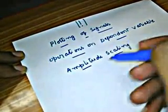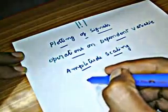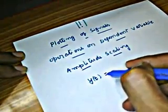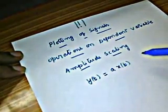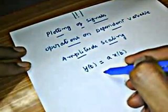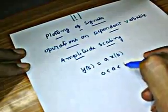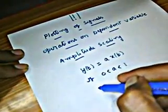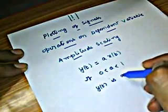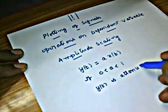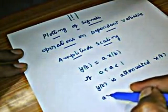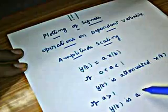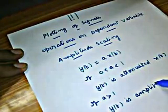For example, let us say I have a signal called x of t. We say y of t is an amplitude scaled version of x of t if we can write y of t as a times x of t. If a lies between 0 and 1, then we say that y of t is an attenuated version of x of t. If a is greater than 1, then we say that y of t is an amplified version of x of t.